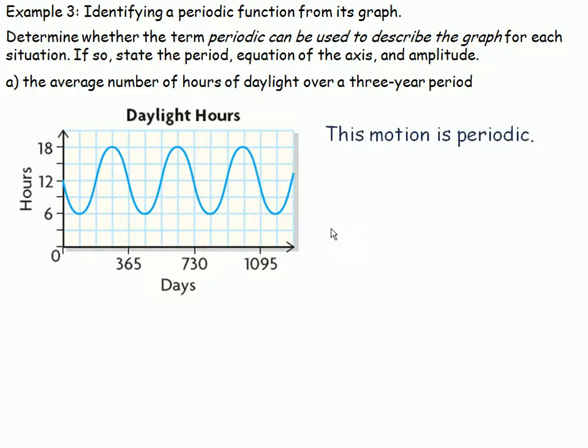This motion certainly is periodic. If we start right here, there's the end of one full cycle. And of course, that is 365 days, so that's the length of the period.